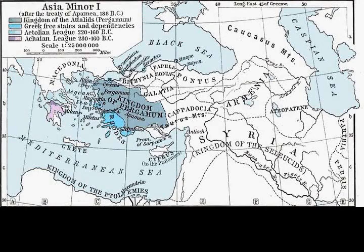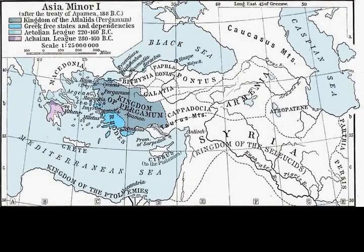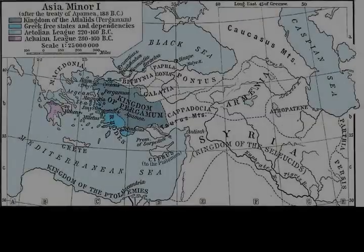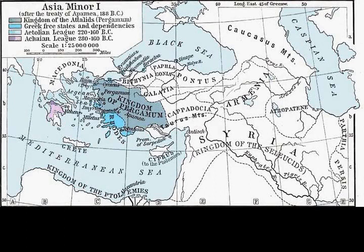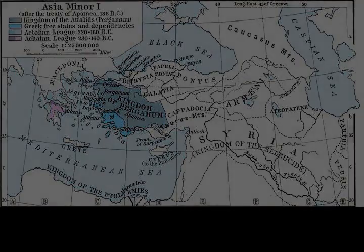In September 190 BC, Aemilius dispatched a part of his fleet to the Hellespont in order to assist the Roman army in its invasion of Asia Minor. Polyxinidas seized the opportunity to attack the Romans at sea. The Roman-Rhodian fleet under Aemilius numbered 58 Roman and 22 Rhodian warships.